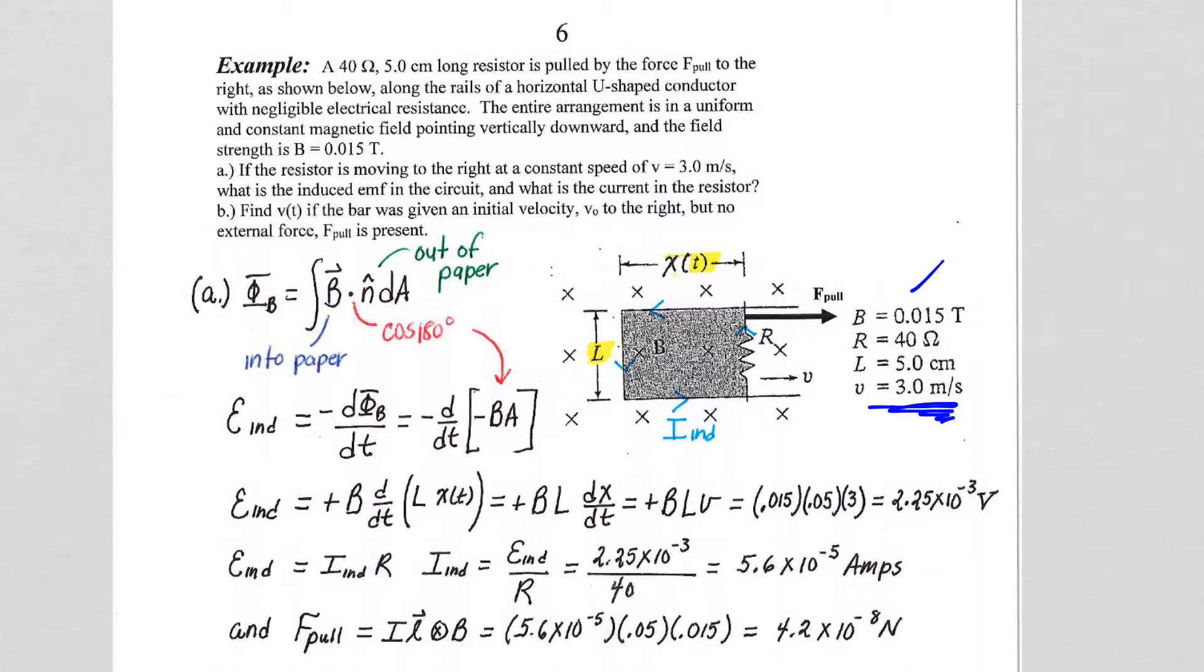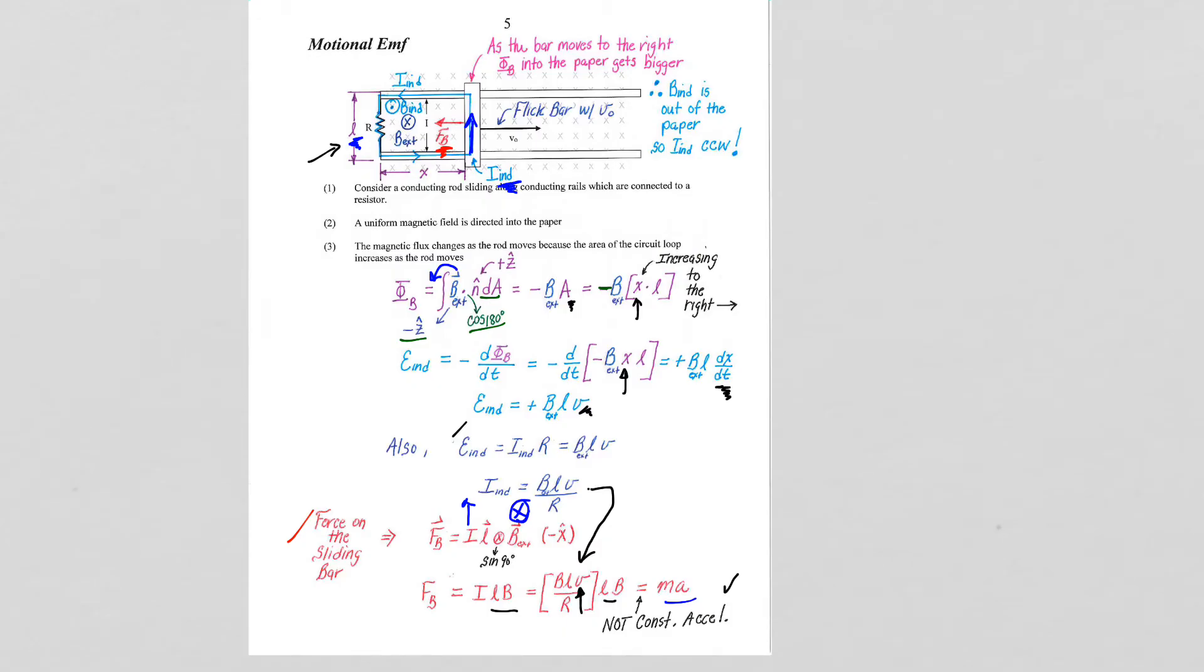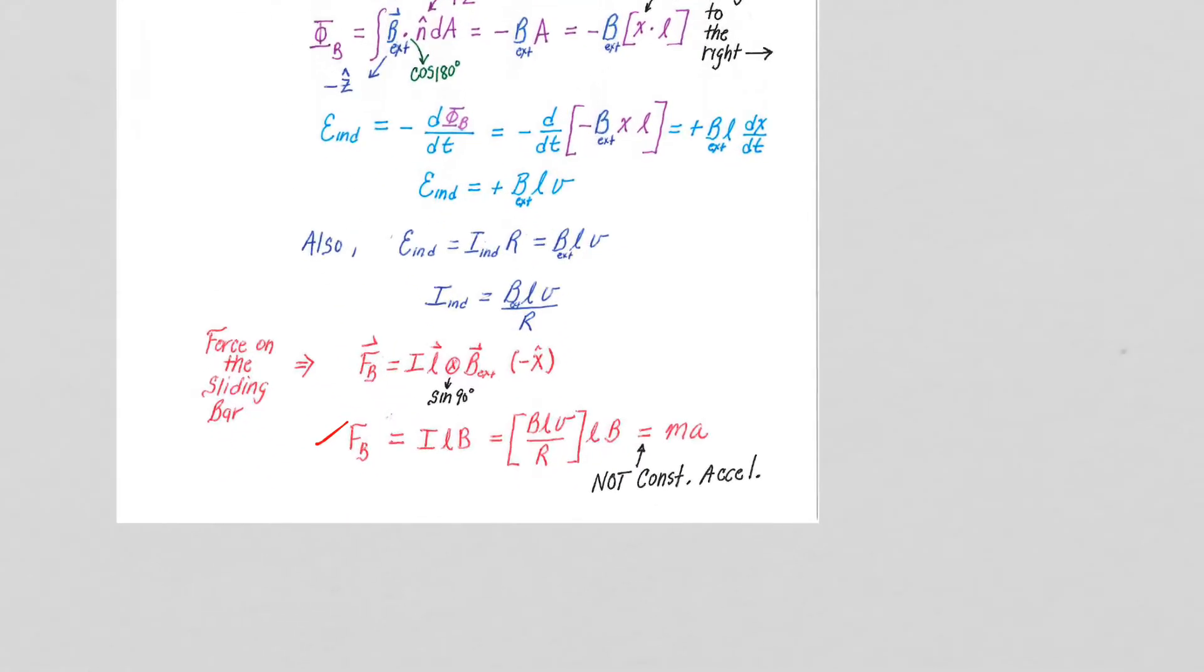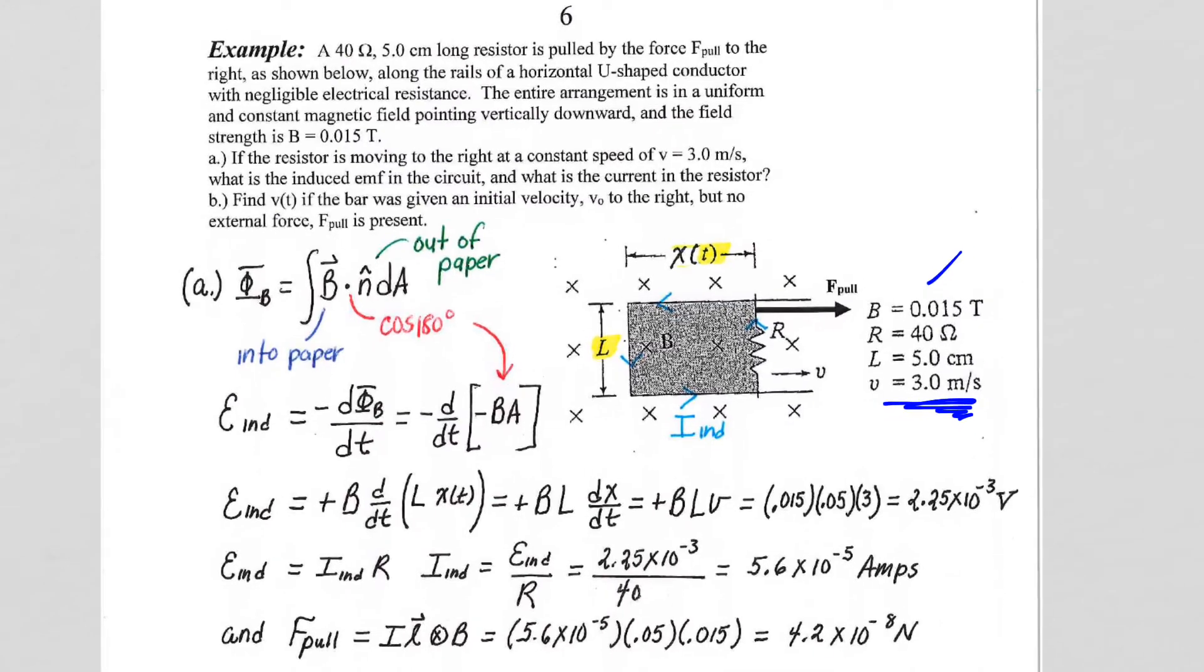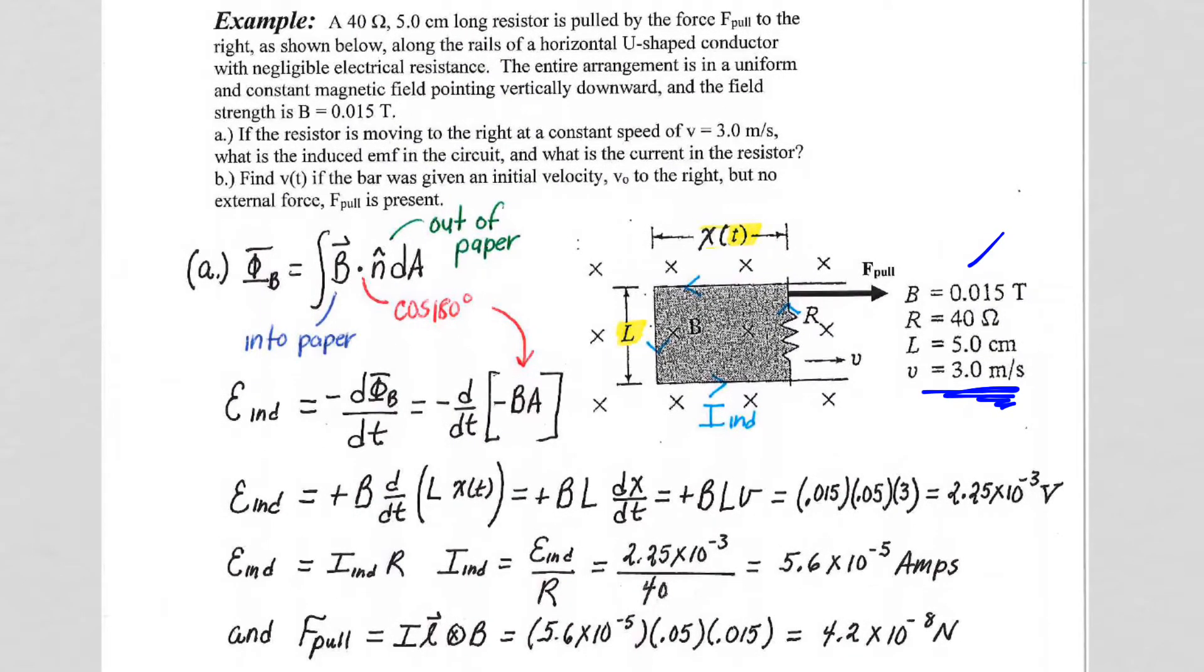And we know from our last page of notes that the constant speed is a problem because if we just flick the bar to the right, as we saw on our last page, let me go back real quick and just revisit that. We saw that if we just give it a flick, we get the magnetic force ILB down here at the bottom that we had from our last page of notes. So we saw that the acceleration is not constant. It's going to decelerate and come to a stop. So let's figure out what we have to do to not have it come to a stop, to keep it moving at a constant speed.